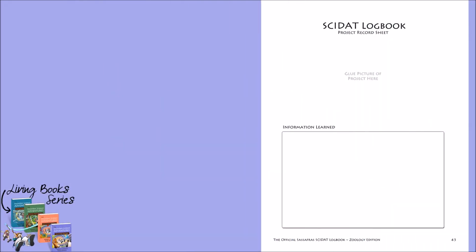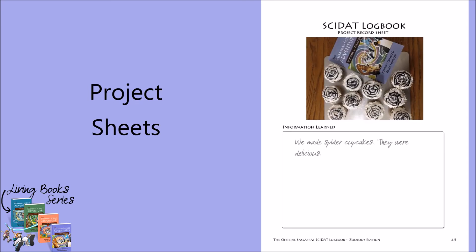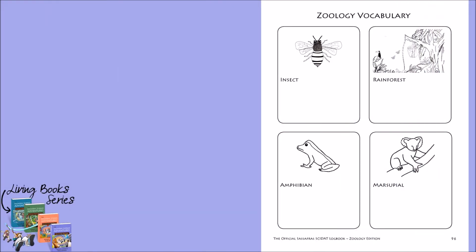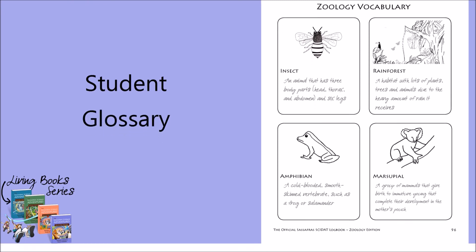Finally, each location will have a blank record sheet, where students can make a scrapbook page of any additional projects they do. In the rear of the CIDAT logbook, you will find a glossary for the students to fill in as they work through the novel.